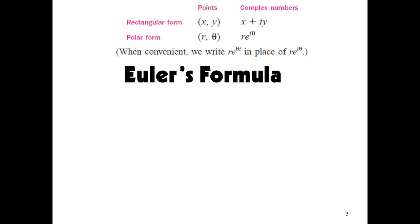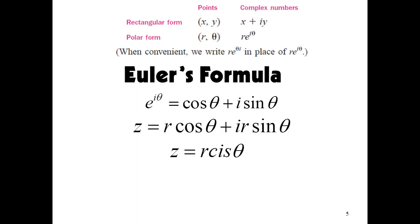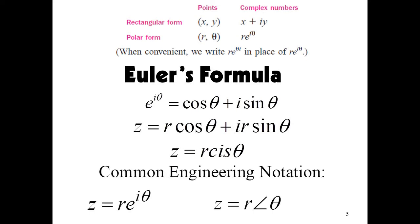Another way of writing a complex number is using Euler's formula, where z equals r cosine θ plus i·r sine θ, or simply z equals r cis θ. You can also find common engineering notation similar to vector quantities in physics: z equals r angle θ.